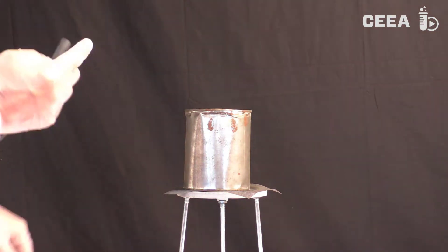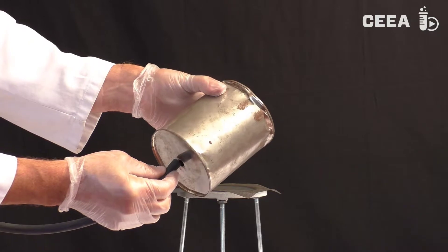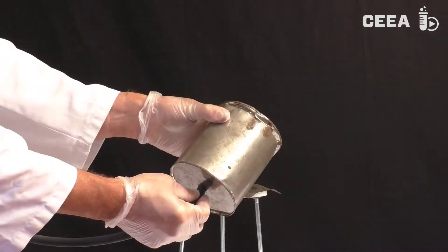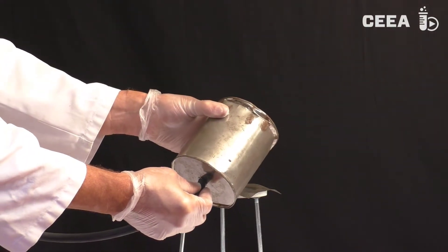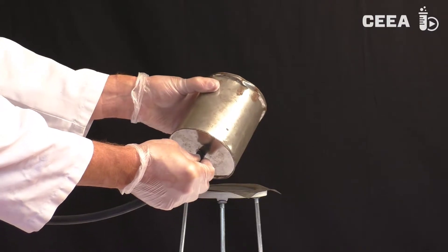First we make two holes in the can, one in the lid and the other one in the bottom. We fill the can with natural gas through the bottom hole using a rubber hose.